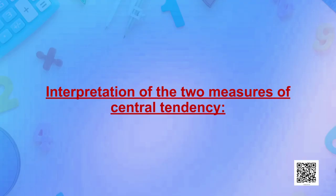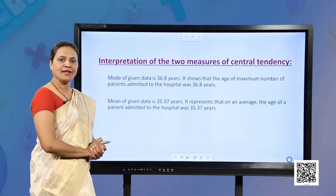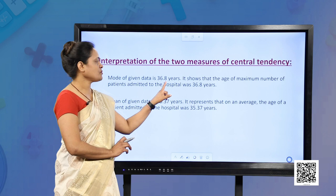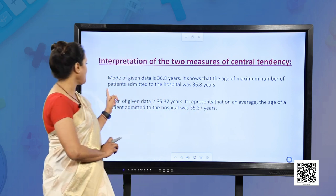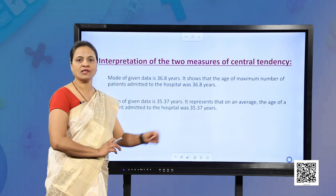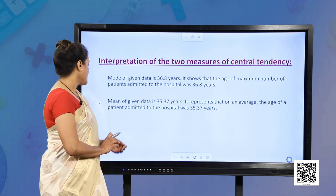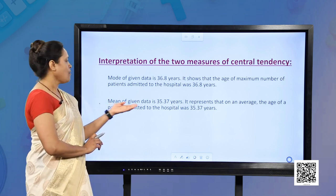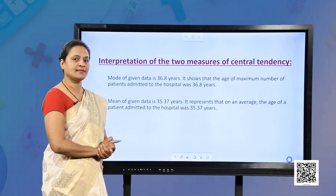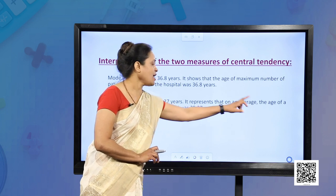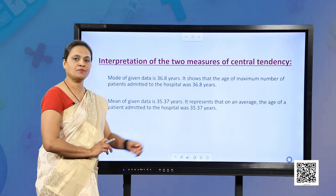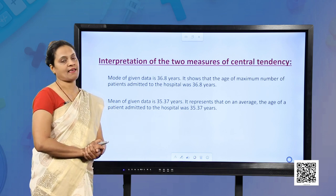Now we interpret these two measures of central tendency. The mode was 36.8 years — this means the age of the maximum number of patients admitted in the hospital was 36.8 years. The mean was 35.37 years — this means that on average, the age of a patient admitted to the hospital was 35.37 years.